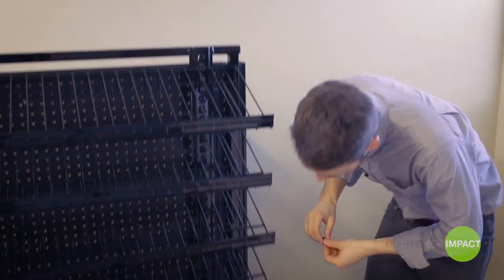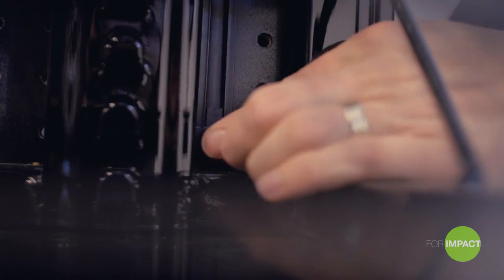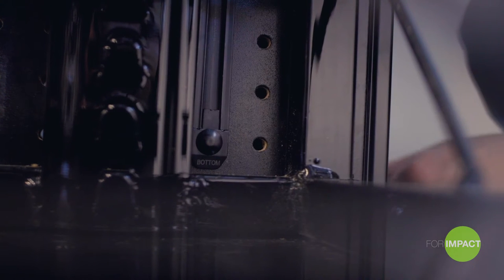Take a second rivet, do the same thing on the bottom side, making sure that you keep your power strip as low as possible on the fixture.